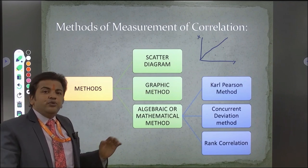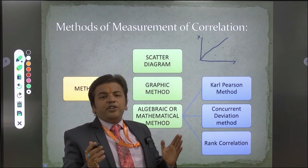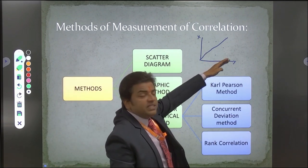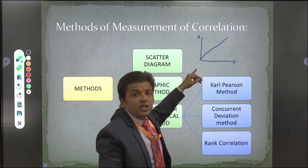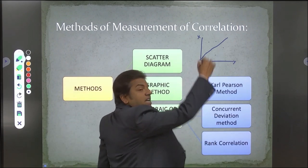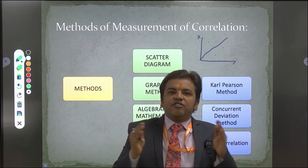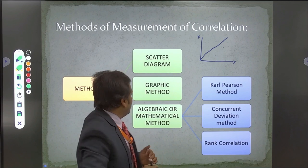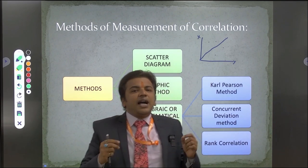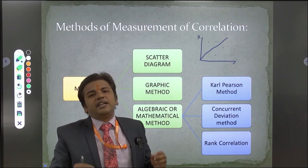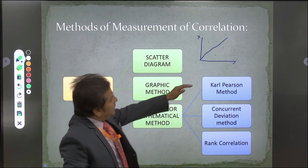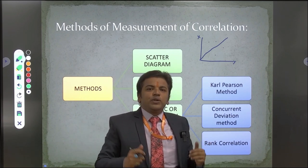For the graphic method, we take the help of graphs to find the correlation between two series. In the scatter diagram, we scatter the diagram and draw a best-fit line. In the graphic method, we take a graph, plot the values, make a line, and see whether both X and Y series are positively or negatively correlated. The third method, also known as mathematical methods, is highly used in business management and commerce research and decision-making. Three popular methods are used here to calculate the correlation.